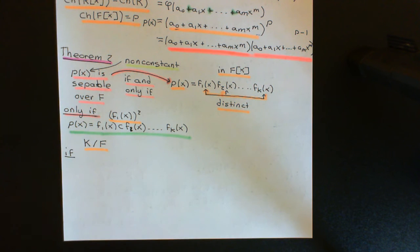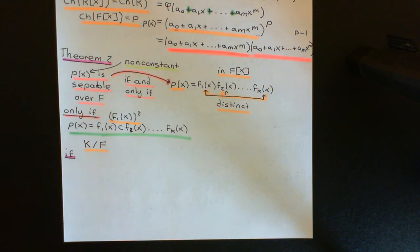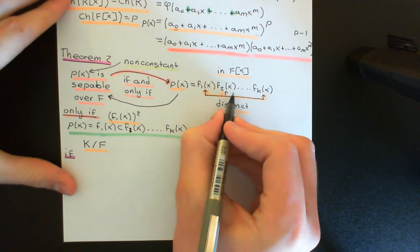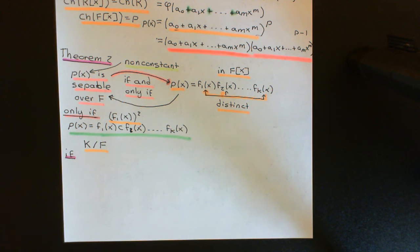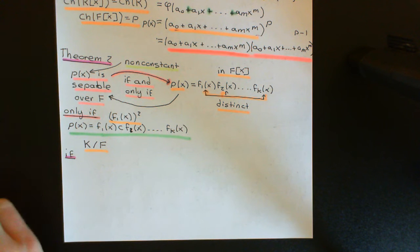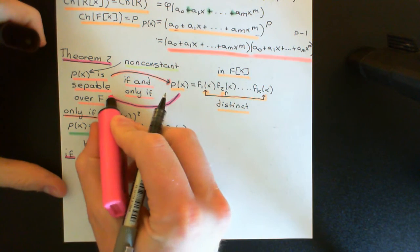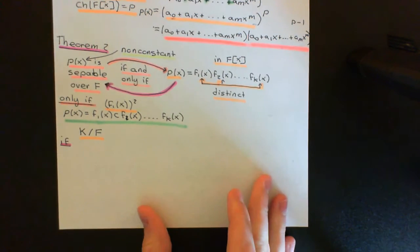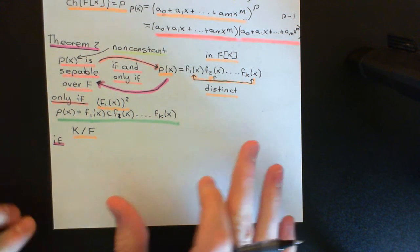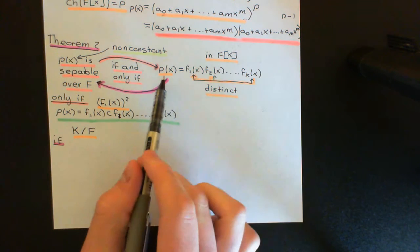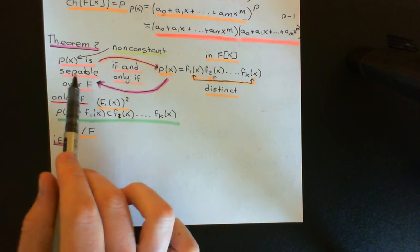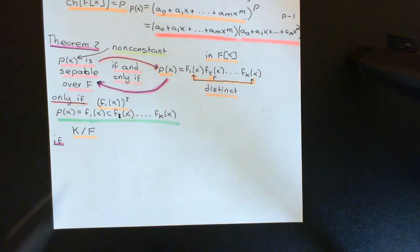Now let's do the 'if' direction, which is slightly more difficult. 'If' corresponds to proving the arrow in the opposite direction: if P(X) can be written as a factorisation into irreducibles that are all distinct, then P(X) is separable over F. We again use proof by contradiction — we assume the distinct factorisation holds but that P(X) is not separable.